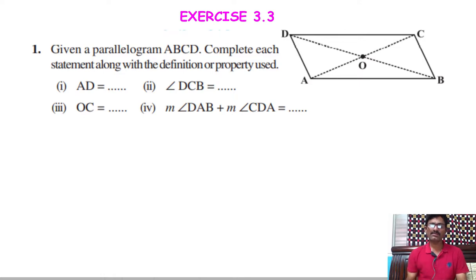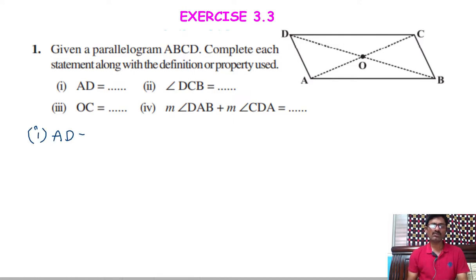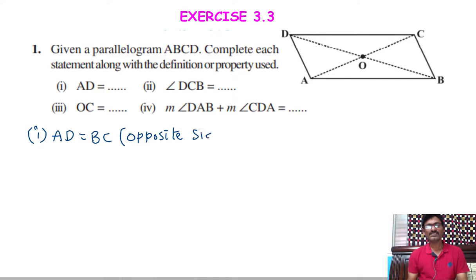In a parallelogram, we know that opposite sides are equal in length. So this length AD is equal to the opposite side for AD, which is BC. So AD equal to BC. The reason is: opposite sides are equal in length.